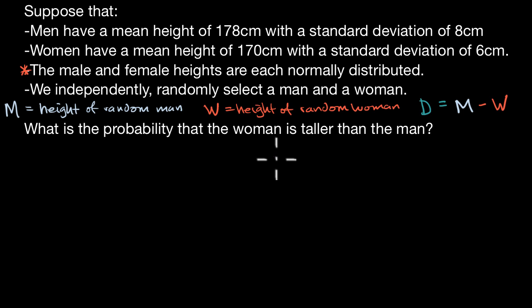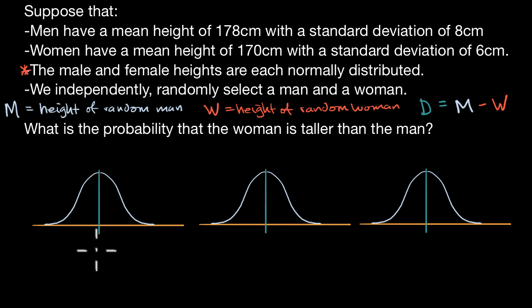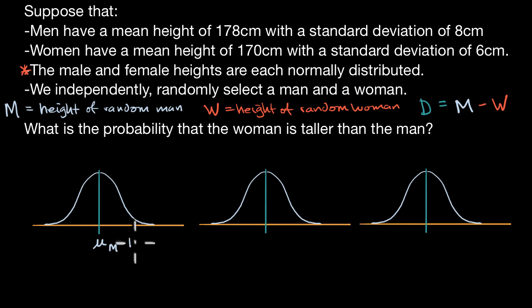Now let's work through this together. To help us visualize, I'll draw the normal distribution curves for these three random variables. The first one is for the variable M. Right in the middle is the mean of M, which is 178 centimeters. We also know it has a standard deviation of eight centimeters.